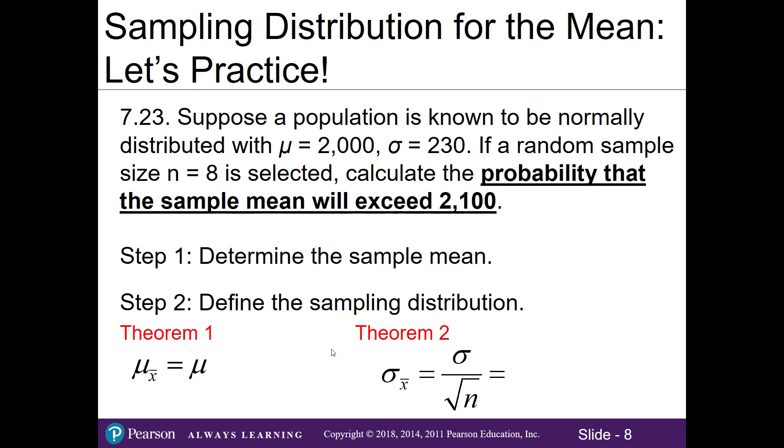In step 1, we identify our sample mean, which is 2100. In step 2, we define our sampling distribution thanks to theorems 1 and 2. Theorem 1 states that if I take all my possible sample means and calculate the average of them, it's the same as my population mean. Since we know my population mean is 2000, we have that for theorem 1. In theorem 2, we calculate the standard error or the standard deviation of our sample means. We take our population standard deviation of 230 and divide it by the square root of 8, giving us a standard error of 81.32.